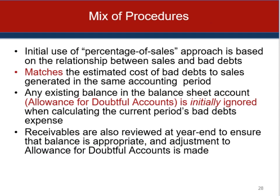The percentage of sales method attempts to match costs with revenues and is frequently referred to as the income statement approach. The percentage of receivables approach provides a reasonably accurate estimate of the net realizable value of receivables on the statement of financial position — commonly referred to as the balance sheet approach. Under the percentage of sales method, bad debt expense is determined by multiplying the estimated percentage times credit sales. Under the percentage of receivables approach, the unadjusted ending balance in the allowance account must be considered in arriving at bad debt expense for the year.